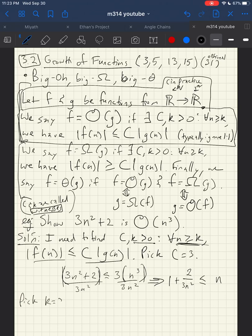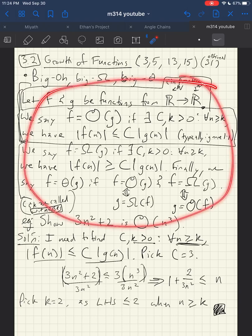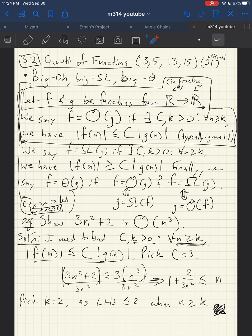So once I've gotten to something where the right hand side is bigger than the left hand side, since this function is decreasing, I can just go from there. So I pick k equal to two as the left hand side is less than or equal to two when n is bigger than or equal to k. And now I am done. And this tends to confuse a lot of students. So I want to stop here, let you rewatch this video. And then I'll come back another time after you've had some time for this sea of symbols to wash over you.